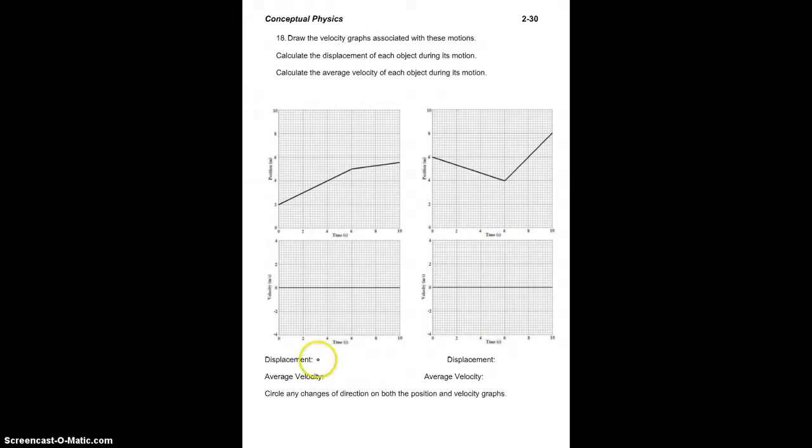We'll start with displacement. Delta x is x final minus x initial. For this graph, x final is here, x initial is here. It's 5.5 meters minus 2 meters, which is 3.5 meters.